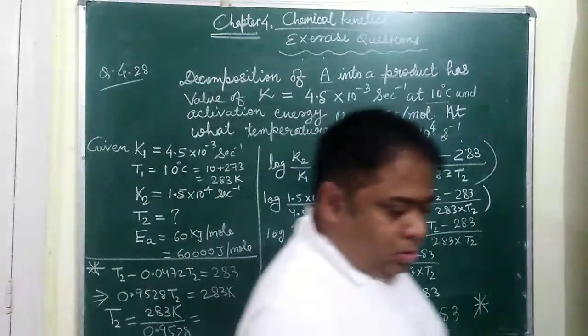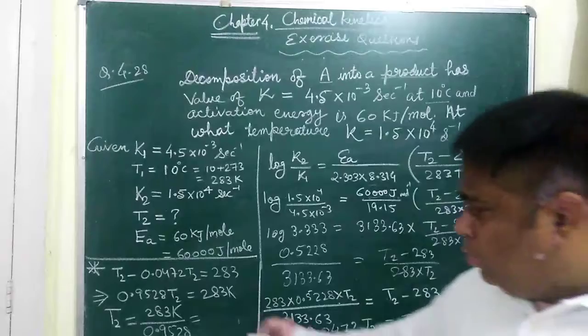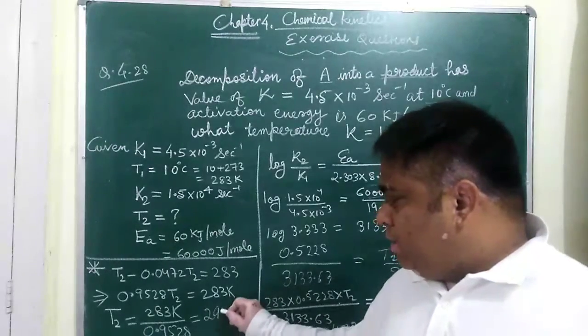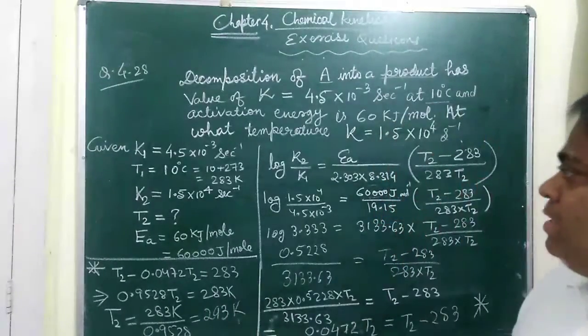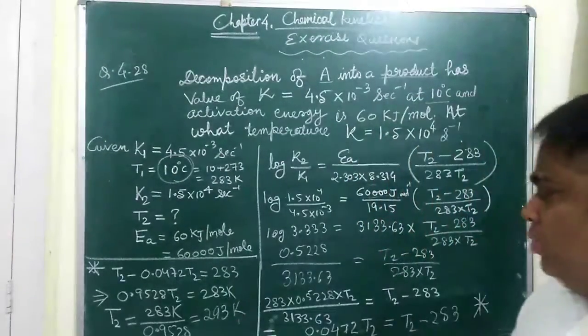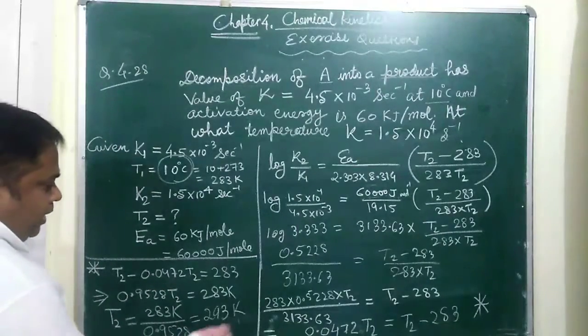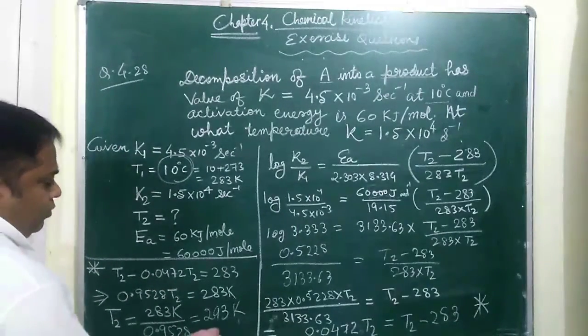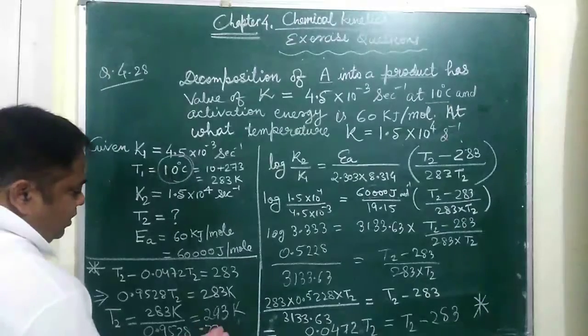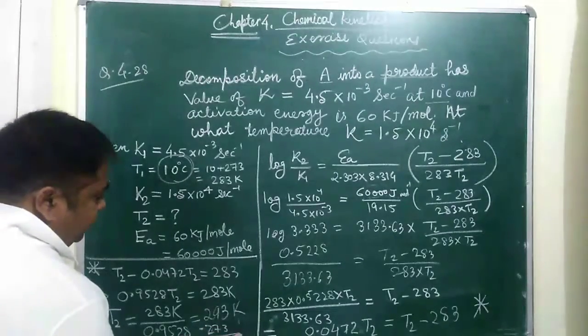This is, this will be 297 Kelvin. But since the given data is in degree C, so we can convert this into degree C. To convert this into degree C, you will subtract it by 273. So 297 minus 273 will be equal to 24 degree C.